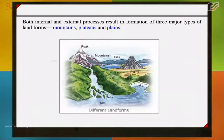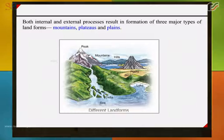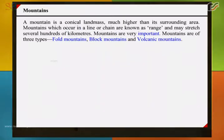Both internal and external processes result in the formation of three major types of landforms: mountains, plateaus and plains. A mountain is a conical landmass much higher than its surrounding area.